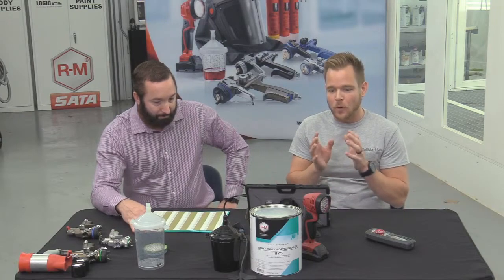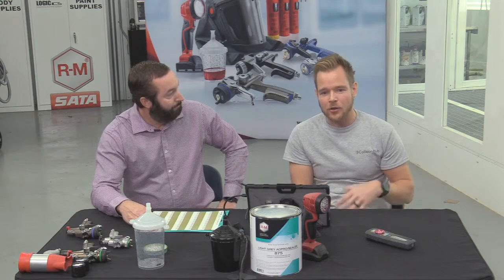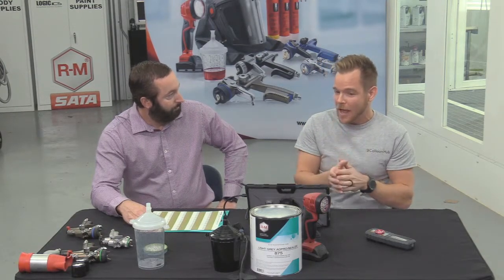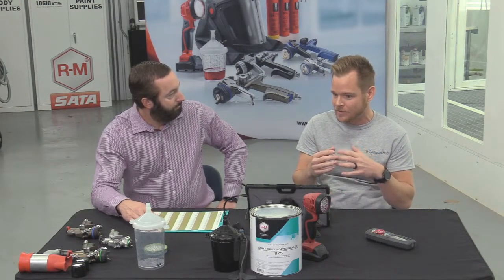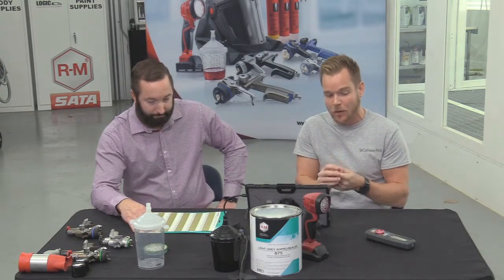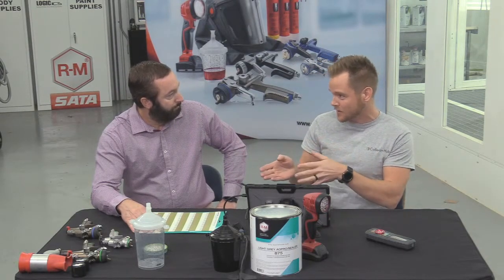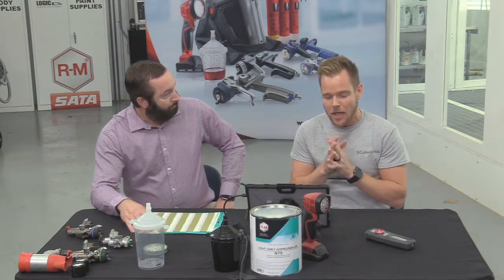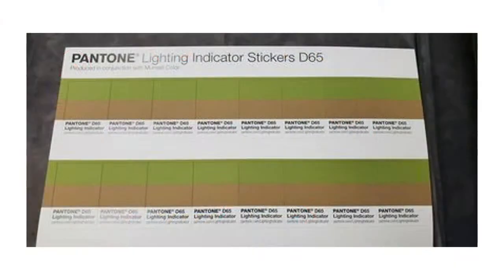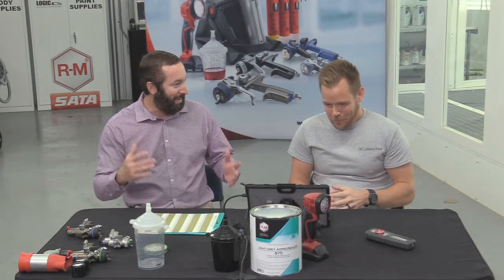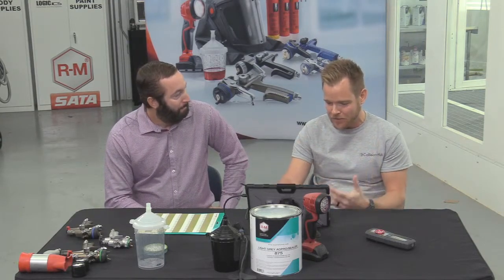We need to know if where we're matching is a safe place to match. Paint companies always say don't match in a booth — partly for cycle time, and partly because you don't really know where your D65 is unless you test it. Here's an example of a shop with booth lighting where they believed they were at 5,500K and 95 CRI. But it's very obvious in this photo that this booth can't be used for color matching — even though they bought bulbs based on those exact specifications.